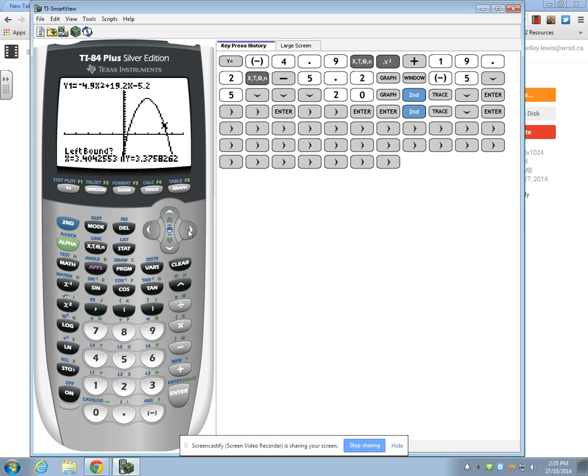This time, the left side of the x-intercept is actually above the x-axis and the right side is going to be just below. So, once we're just above, we can press enter for left bound. Scroll just below the x-axis to be on the right side of the x-intercept and press enter again.